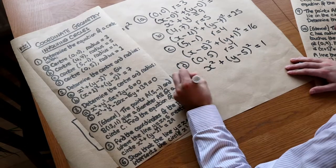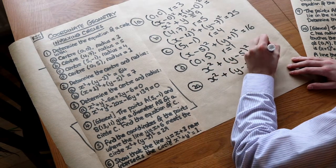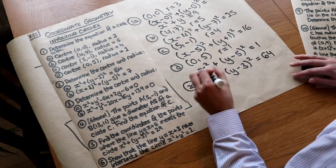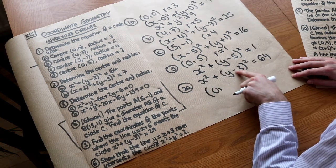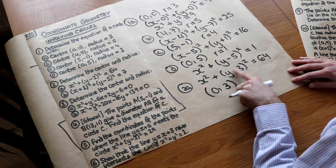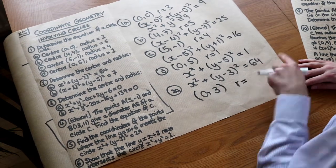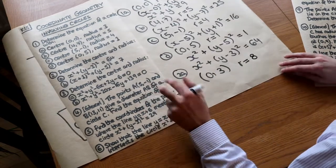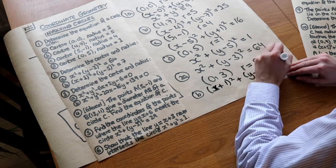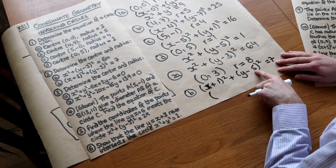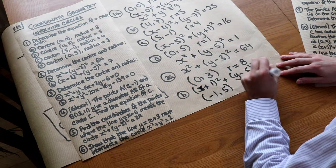For Question 2, we reverse the process. For the equation X-squared plus (Y minus 3) squared equals 64: the A is 0 and the minus 3 gets negated to give B equals 3, so the centre is (0, 3) and the radius is the square root of 64, which is 8. For (X plus 1) squared plus (Y minus 5) squared equals 7: we negate the values to get centre (minus 1, 5) and radius equals the square root of 7.